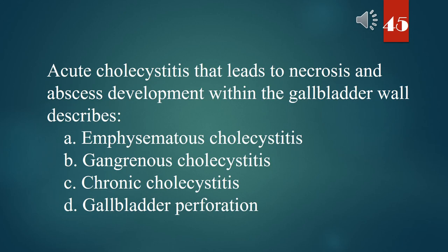Acute cholecystitis that leads to necrosis and abscess development within the gallbladder wall describes: A. Emphysematous cholecystitis. B. Gangrenous cholecystitis. C. Chronic cholecystitis. D. Gallbladder perforation. The answer is B. Gangrenous cholecystitis.